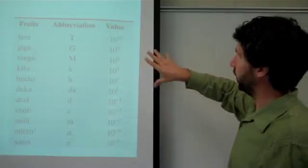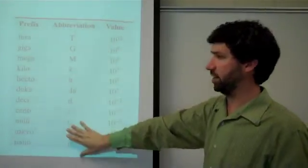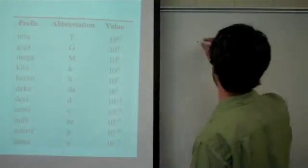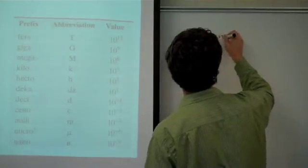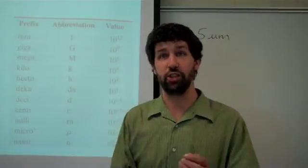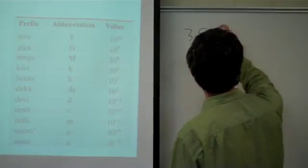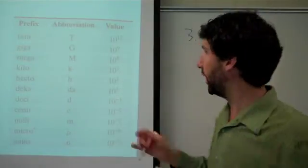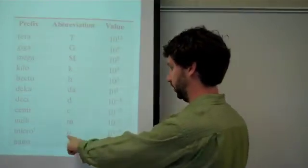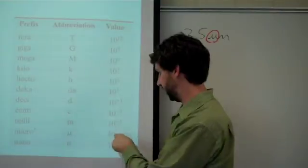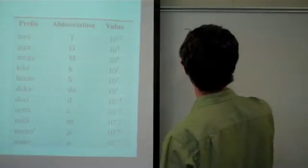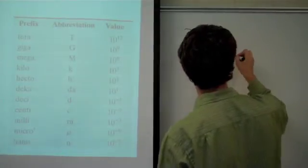I'm going to show you how to convert from something that has a scientific prefix into normal notation. We know that the prefix and its power of 10 are interchangeable, so let's start with an example: 3.5 micrometers. The key here is that we want to do something with that 'micro.' Since micro and 10 to the negative 6th are interchangeable — you can think of them as equaling each other — we can simply write this as 3.5 times 10 to the negative 6th meters.